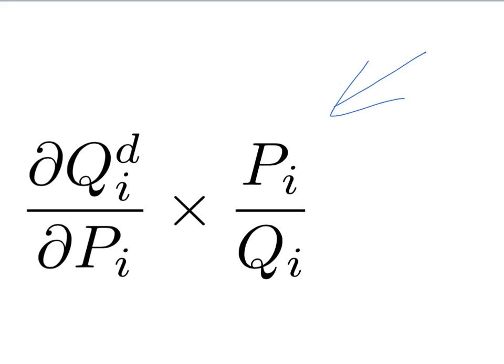However, on this slide we have the exact formula. It's got two bits: this bit on the left, which is simply one over the slope of the demand curve at the relevant point. Just as a reminder, slope is rise over run — change in price over change in quantity — so this is one over the slope of the demand curve. And the second part is simply price divided by quantity at the point we're interested in. So we can use this formula to get an exact measure of the own price elasticity of demand at a particular price-quantity combination.